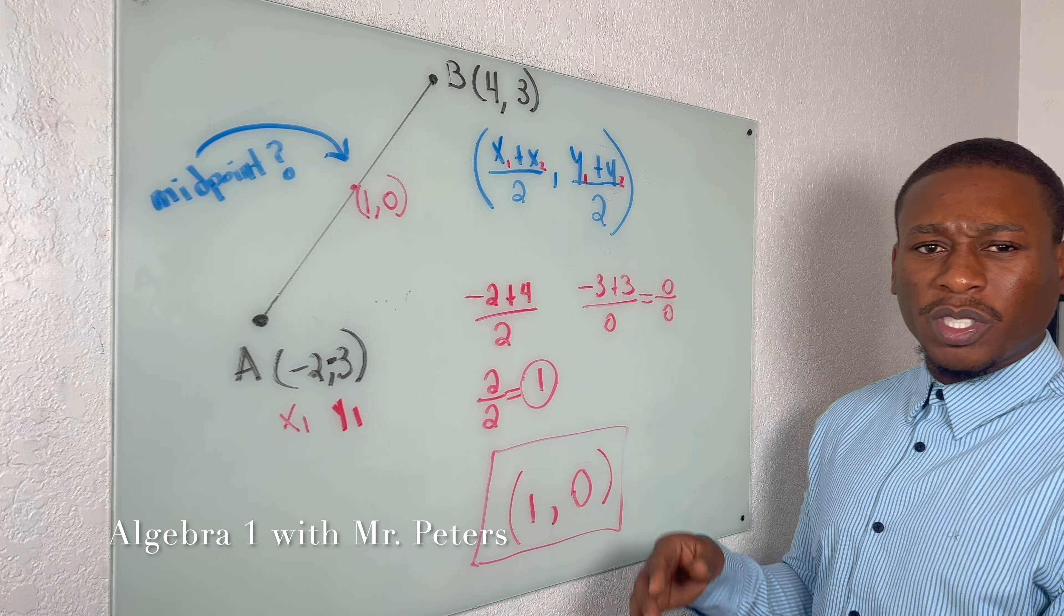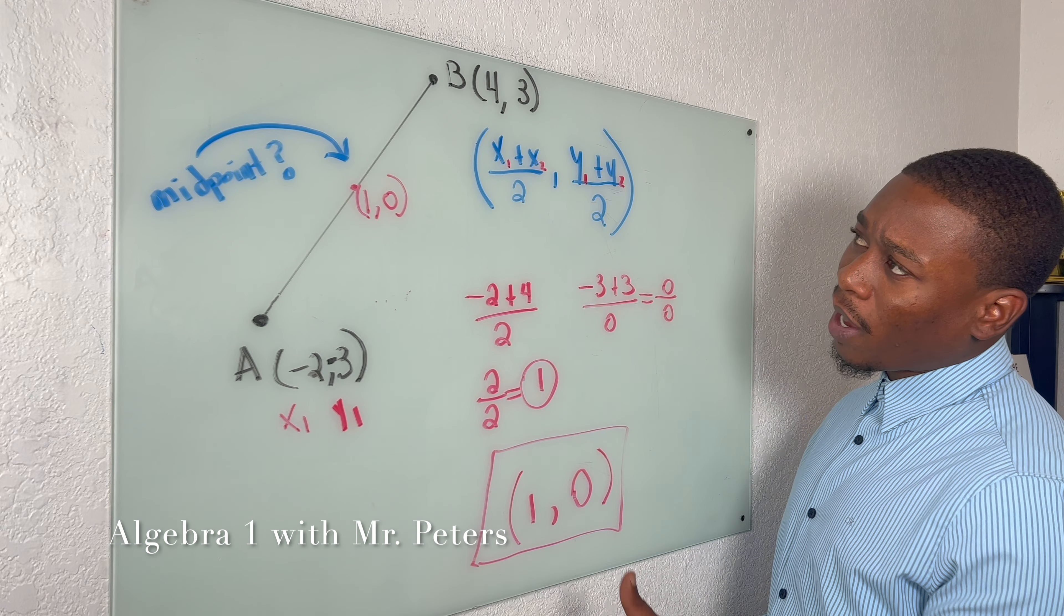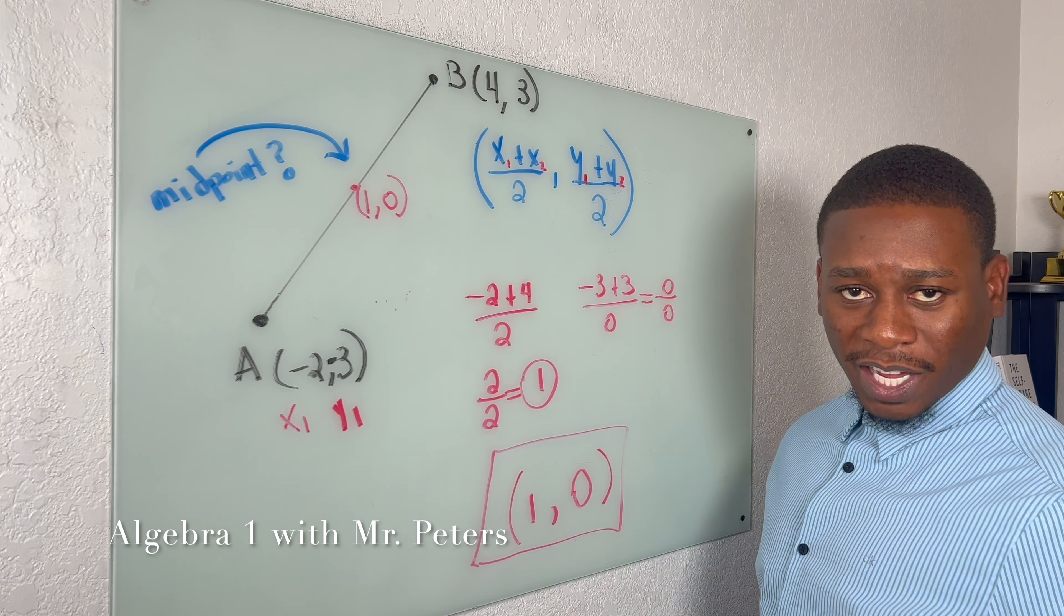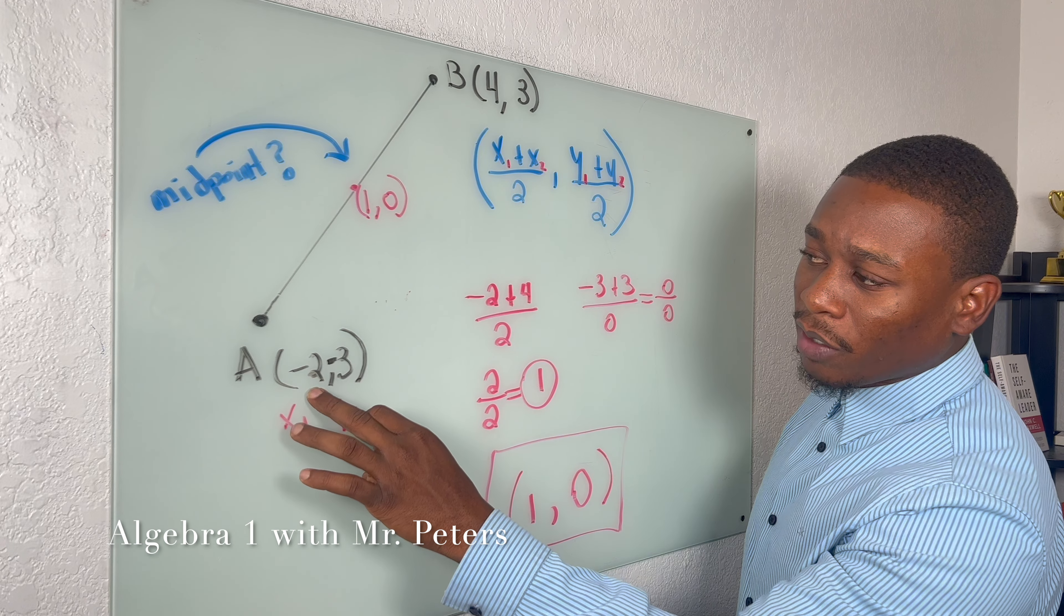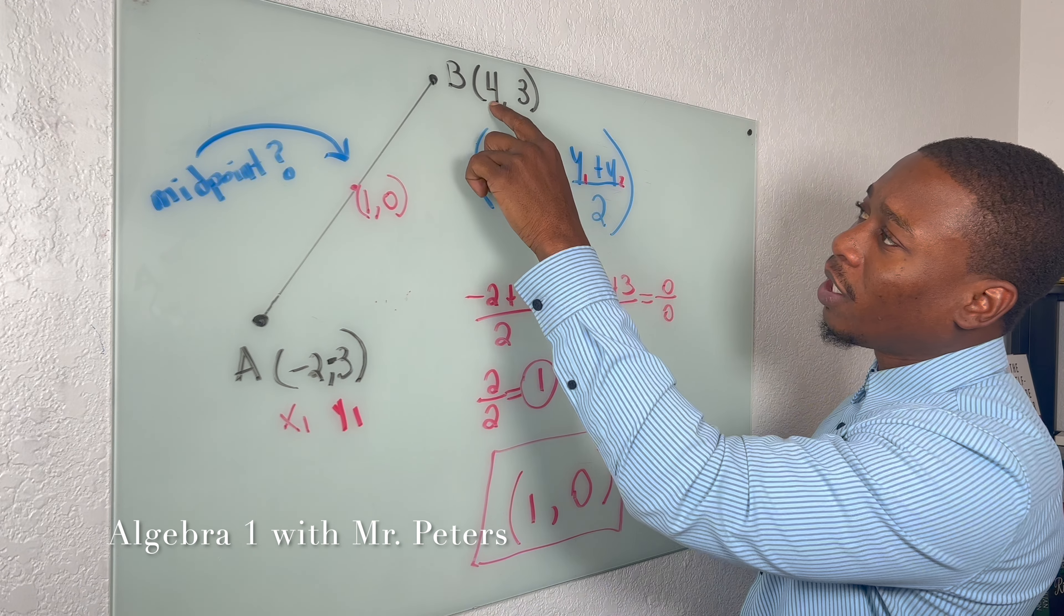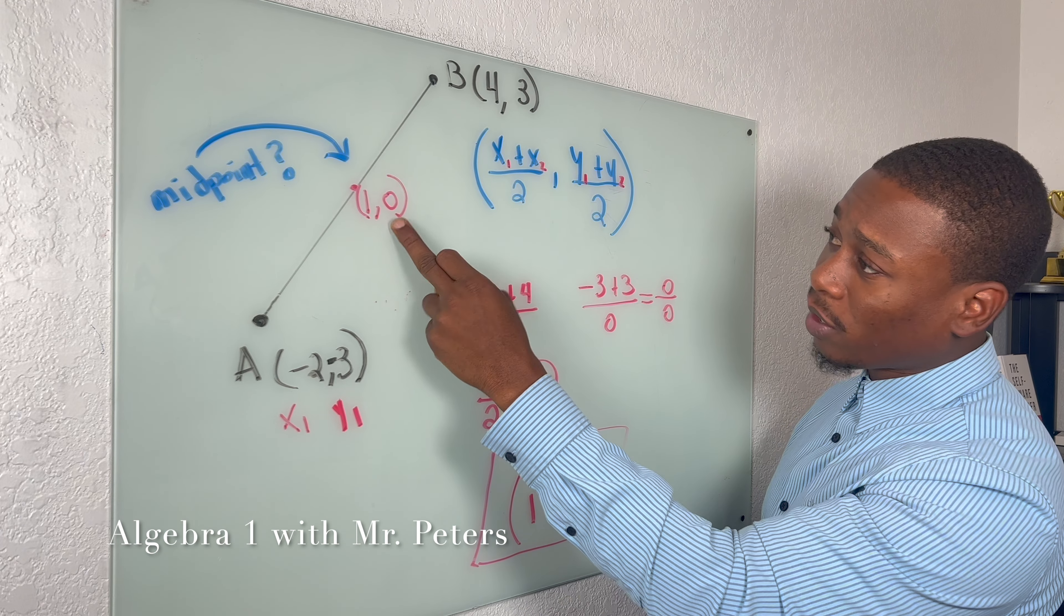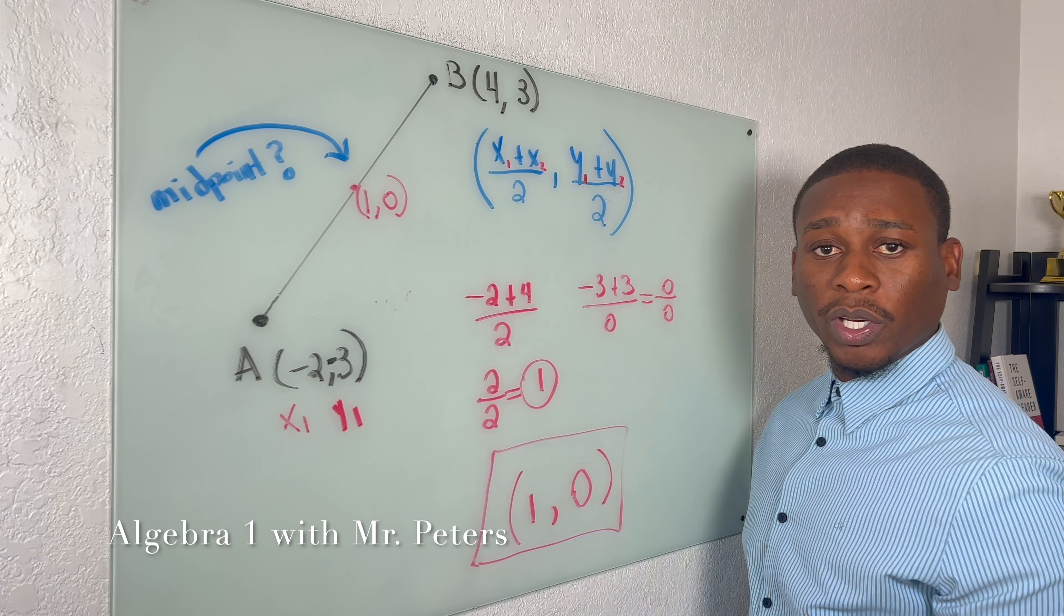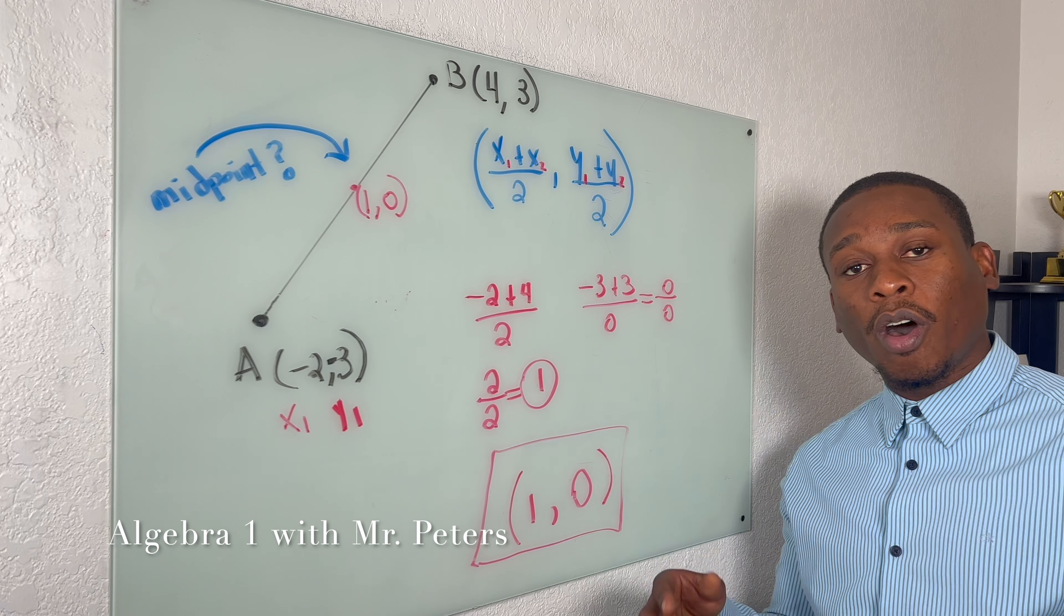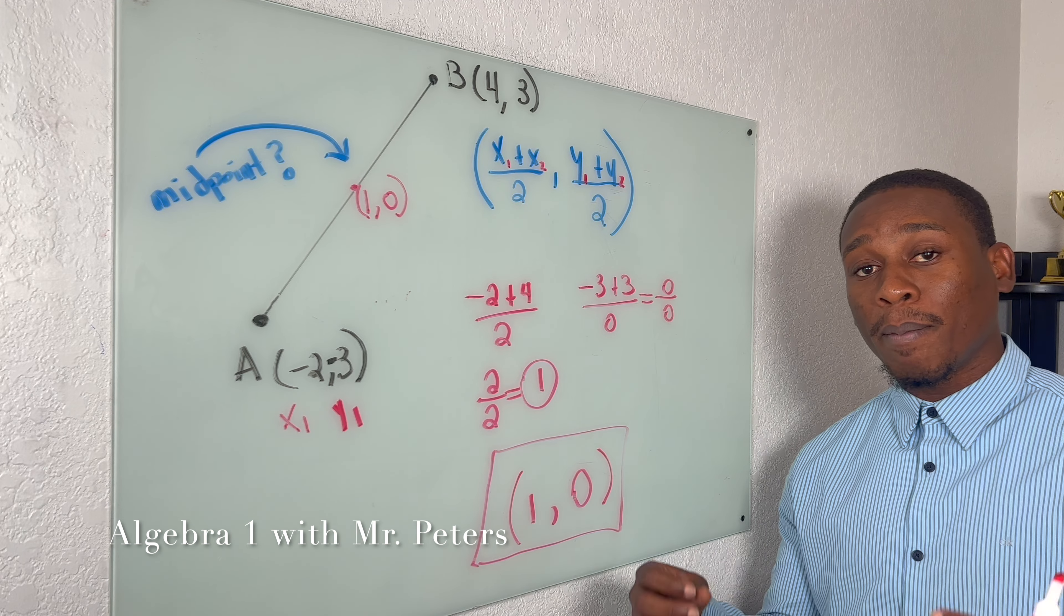And if you want to double check, just think about how many spaces it takes. So to get from -2 to positive 1 is 3. To get from 4 to 1 is 3, right? -3 to 0 is 3 and 0 to 3 is 3. So when we look, they all have the same distance from that middle point.